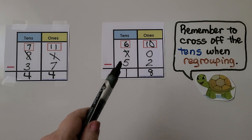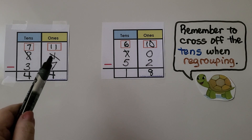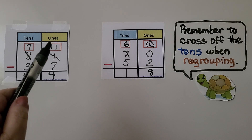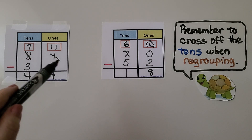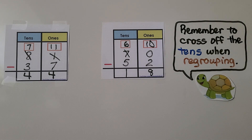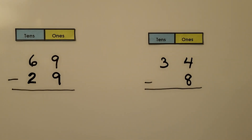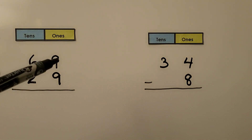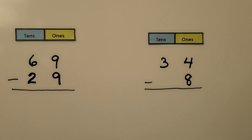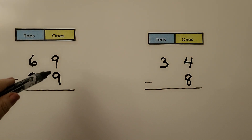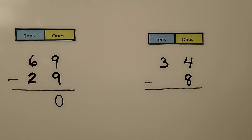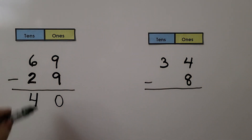Remember to cross off the tens when you regroup. You can cross off the ones and write how many ones you have above what you crossed off. Let's try it again without the subtraction frame. We look at the ones: we have 9 ones and we need to take 9 ones away. We have 9 and we're taking away 9, so we have 0 ones left. We have 6 tens minus 2 tens — that's 4 tens. That means 69 minus 29 is equal to 40.